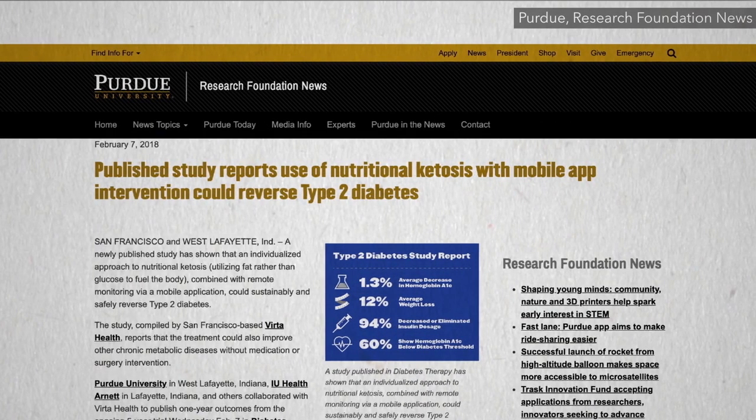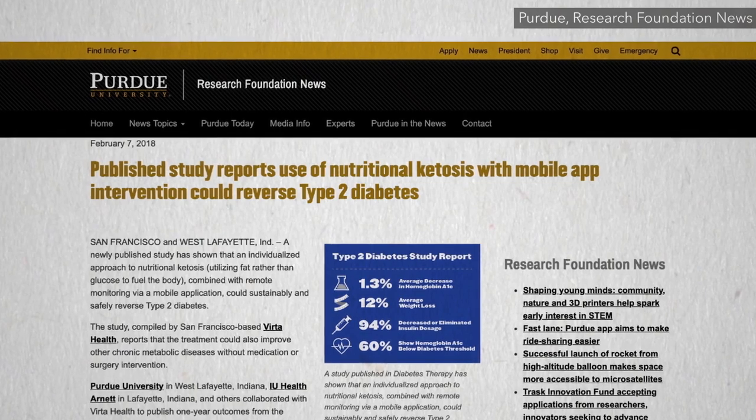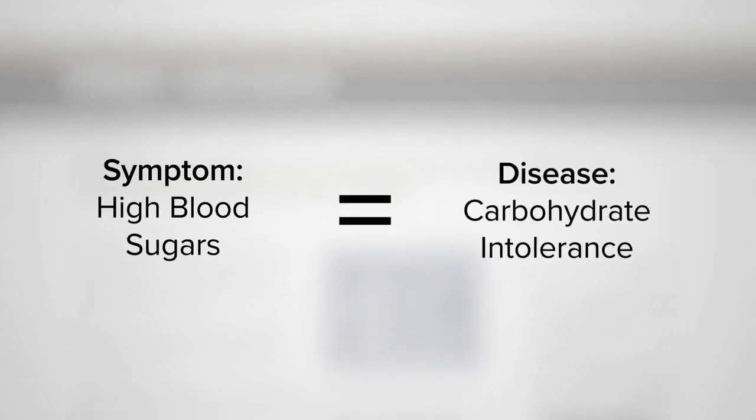There's a keto product company that claims ketogenic diets can reverse diabetes, but they are confusing the symptom, high blood sugars, with the disease.